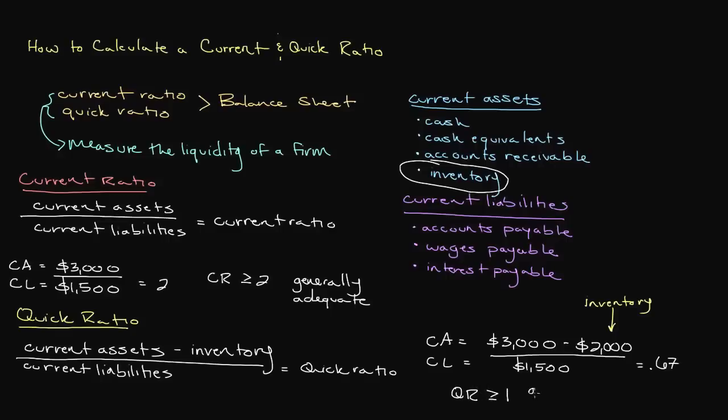Generally a quick ratio of 1 is adequate, so you could say that we have some liquidity issues given our current financial position. Once again though, researching the industry average will help us get a more accurate gauge on what is an acceptable quick ratio.